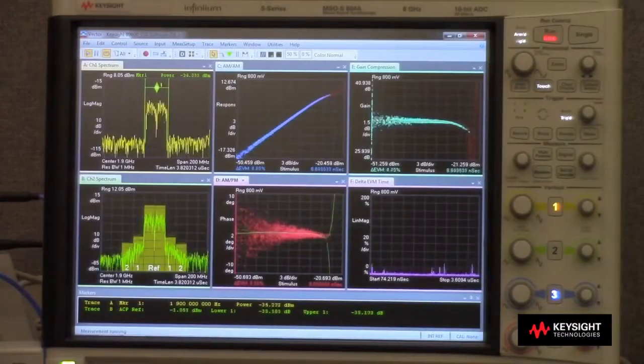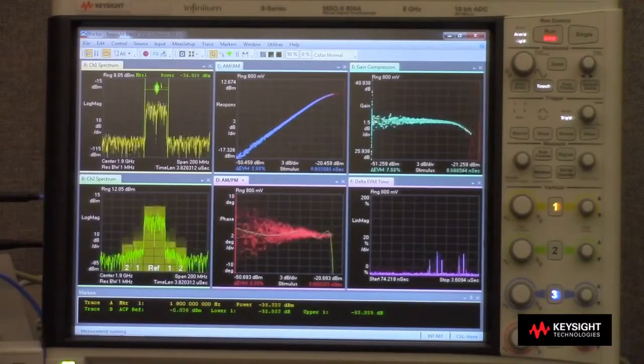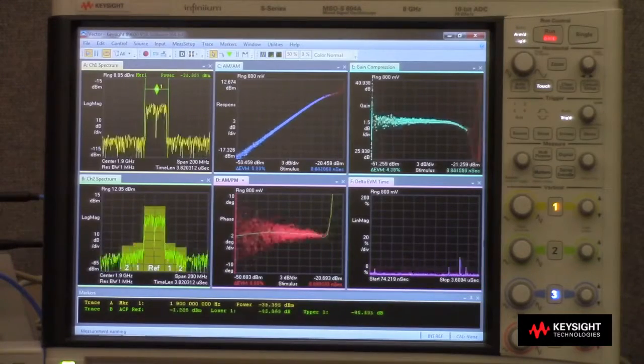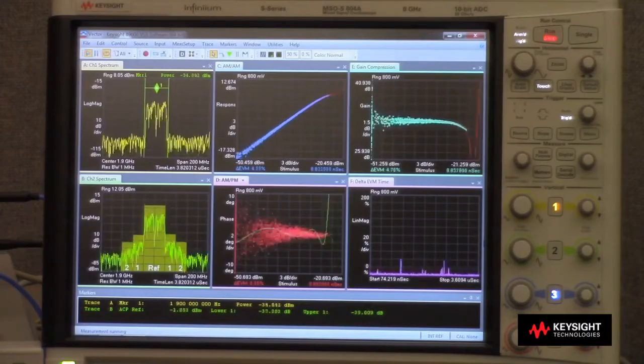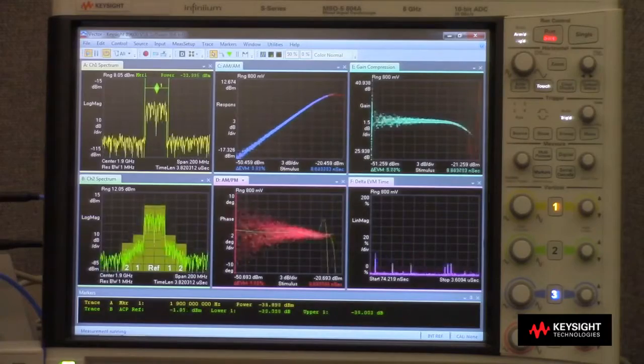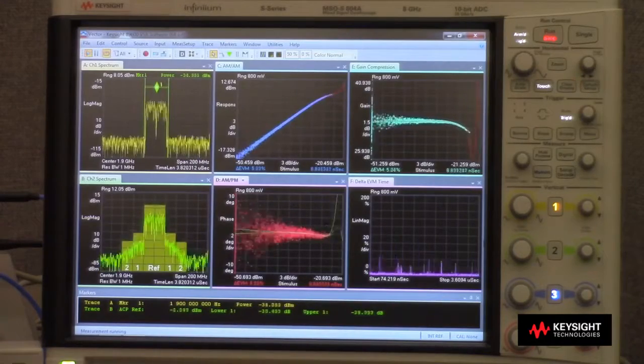Here we can see our measurement results in the 89601 VSA software running directly on our S-Series oscilloscope. We can see here in the upper left hand corner our input spectrum of our two component carrier LTE signal. And just below that we can look at the output spectrum of the power amplifier under test.